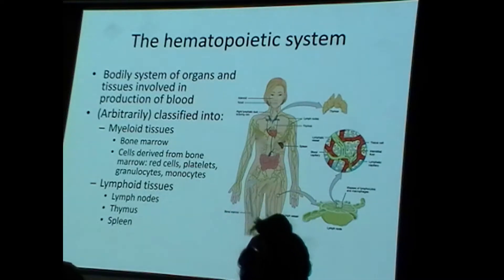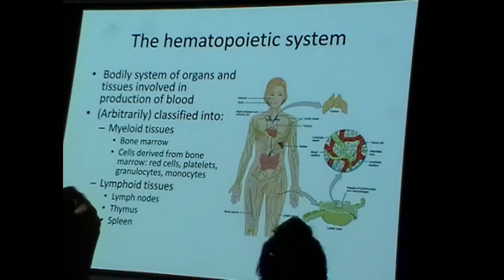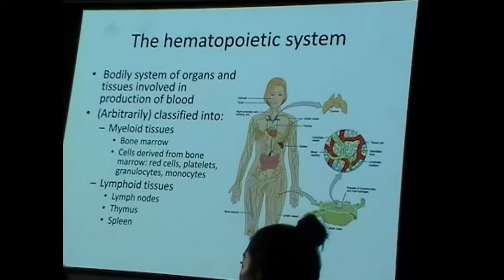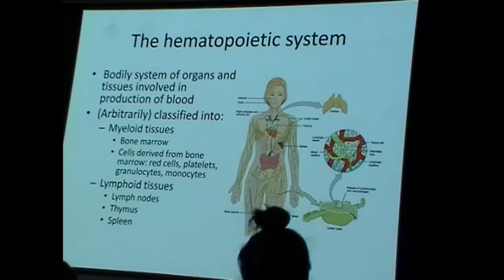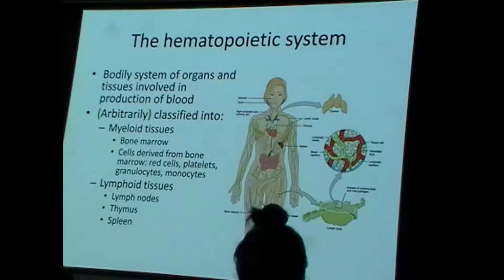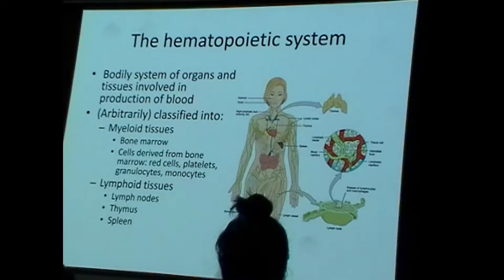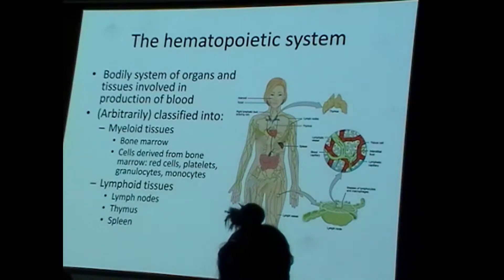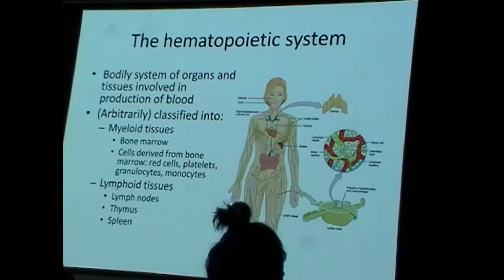We're going to talk about diseases of white blood cells, and briefly remind ourselves that the hematopoietic system exists. The hematopoietic system is designed to produce blood. The extracellular matrix of blood is about 97 percent water — you don't need the bone marrow to produce water. It's a system because there are different organs involved in the production and maturation of the formed elements of the blood.